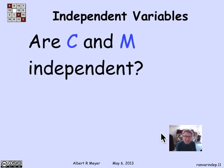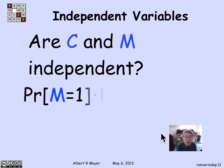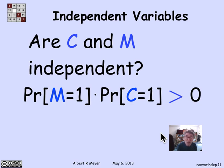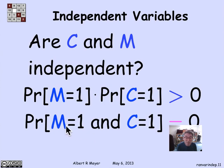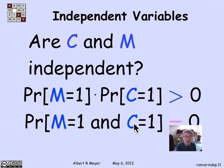Let's practice: are c (the count of heads when flipping three coins) and m (the 0,1 match variable) independent? Certainly not. There's a positive probability that the count is 1, and a positive probability of a match (probability 1/4), so their product is positive. But the probability that you match and have exactly one head is 0, because one head means two tails and no match. So the product doesn't equal the probability of the conjunction — they're not independent.